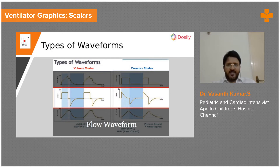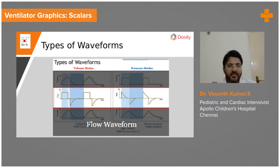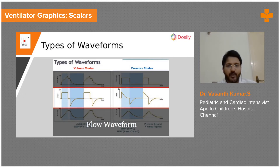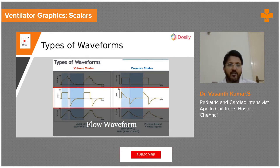The last graph is the pressure-time scalar in volume control mode. Here you set the tidal volume — suppose 100 ml. The ventilator gives a flow; this flow increases the pressure until the 100 ml tidal volume is reached. Once 100 ml is reached, a pause is given. During this pause, the pressure drops and equilibrates between all the alveoli. That is why you see a peak that plateaus before going into expiration.